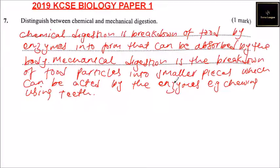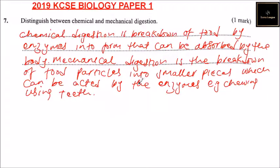So that is the difference between chemical digestion and mechanical digestion. Chemical digestion happens through chemicals, that is enzymes. Mechanical digestion is when you break down or reduce the size of food particles so that chemical digestion can take place more easily. That's how you answer that question.